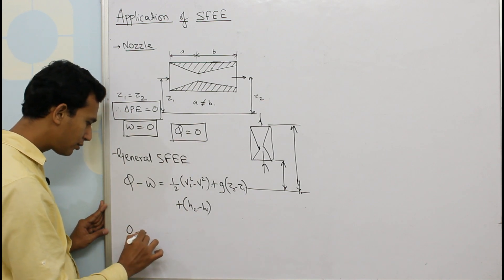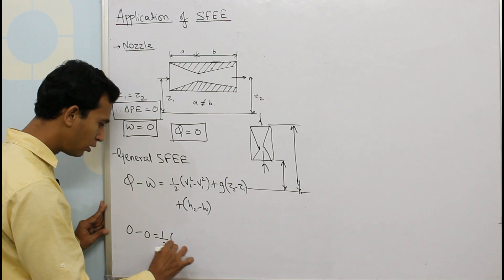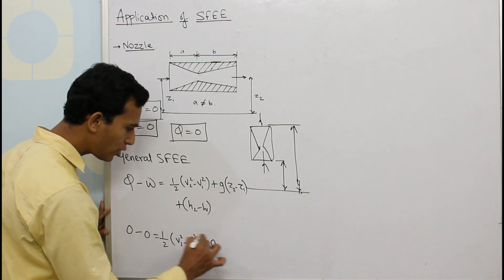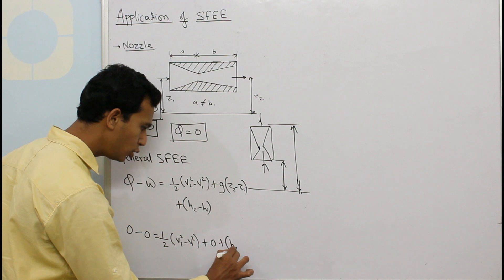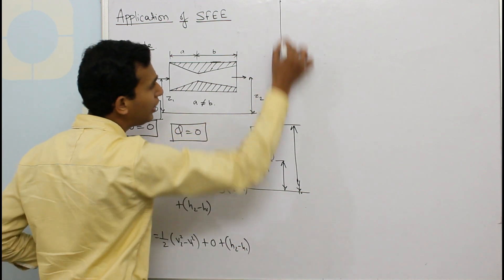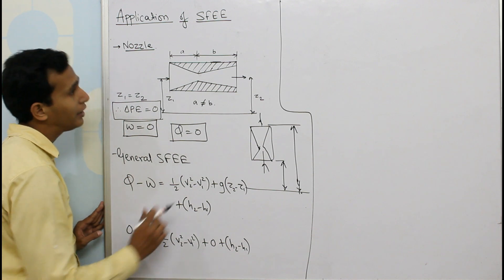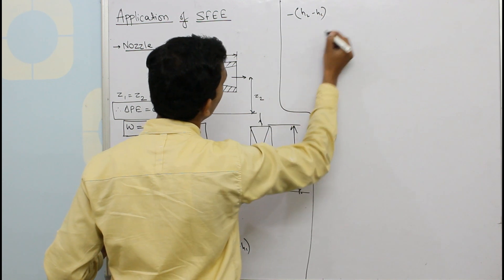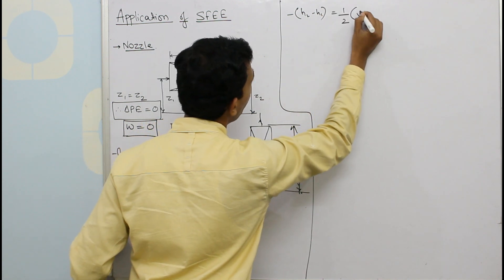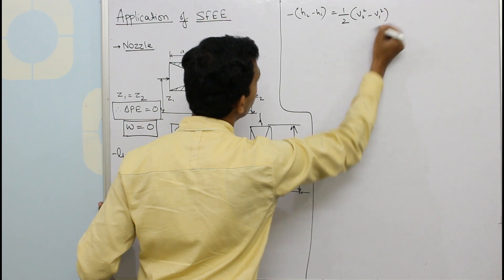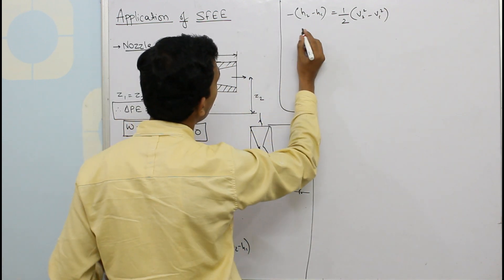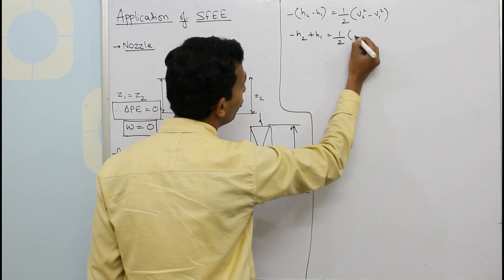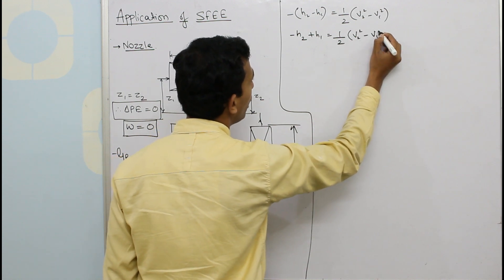Substituting the conditions, we get 0 minus 0 equals one-half times (V2 squared minus V1 squared) plus zero plus (H2 minus H1). Rearranging, it becomes: negative (H2 minus H1) equals one-half times (V2 squared minus V1 squared), which gives us H1 minus H2 equals one-half times (V2 squared minus V1 squared).